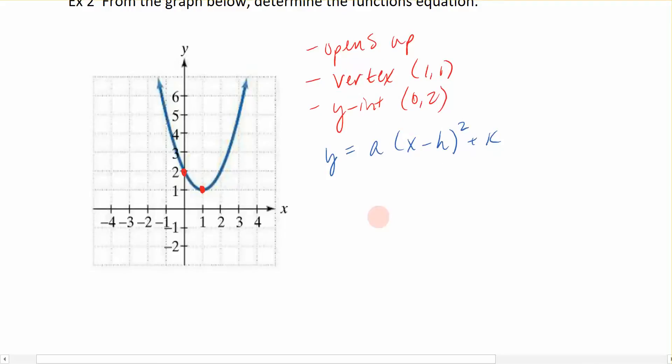So we're going to replace the h and the k with the vertex from up here. That's going to make the equation look like y equals a times (x minus 1) squared plus 1 for the h and the k.